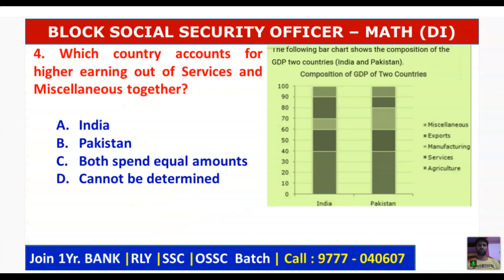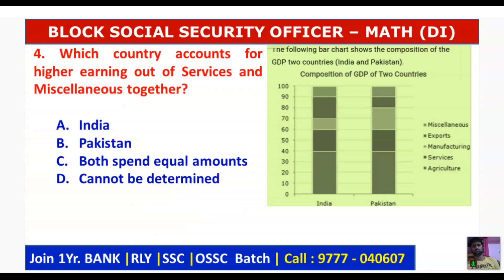Question number 4: Which country accounts for higher earnings out of services and miscellaneous together? You need to find services and miscellaneous together. If the percentage of services and miscellaneous is equal, then you will not be able to differentiate. If you have option A, you will be able to do that.